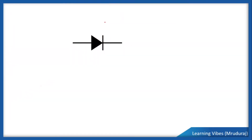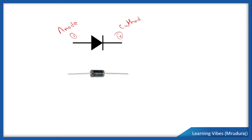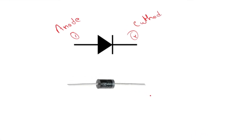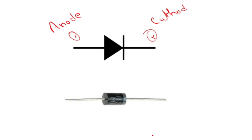This is the symbol of a diode. There are two terminals in the symbol — terminal number one and terminal number two. Terminal number one is known as the anode and terminal number two is known as the cathode. You are here to know how to identify the terminals of a real diode. When you see a real diode, it looks like this, and now let's understand how to identify which one is anode and which one is cathode. This silver line indicates the cathode.